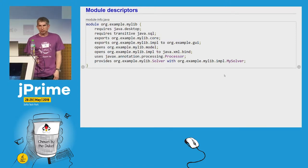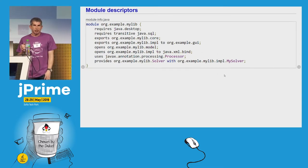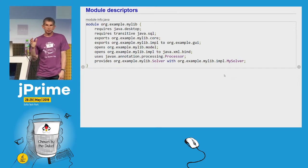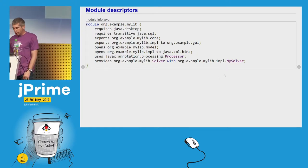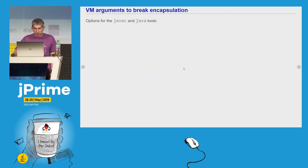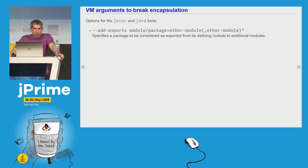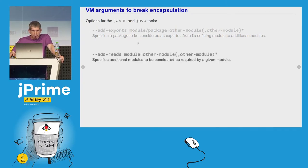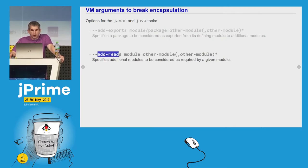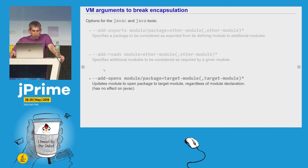The Java module system provides strong encapsulation. A module can specify explicitly which parts of it are visible for other modules and which parts should be hidden. But sometimes we want to break this encapsulation — we might want to still have access to the hidden parts of a module. We can do this because the javac and java tools provide us some special command line options. For example, I can ask that a module should export a package that was otherwise hidden, require additional modules, or open an additional package for deep reflection.